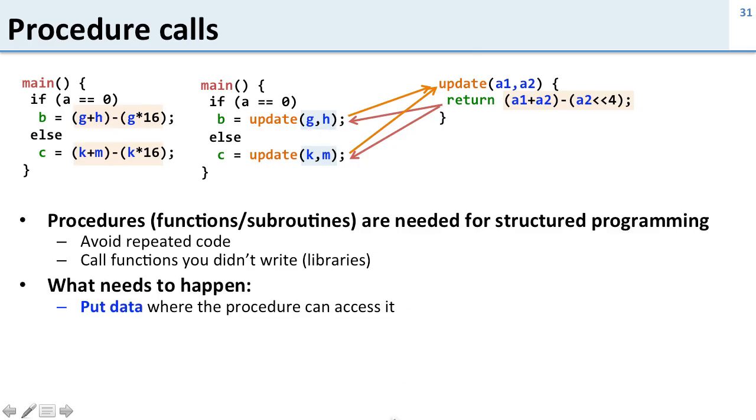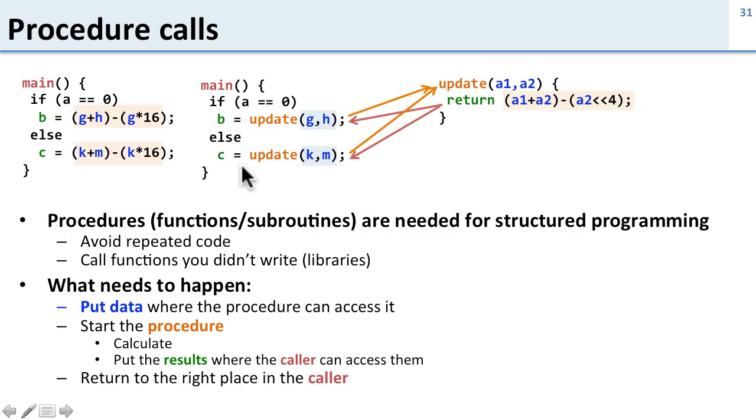In order to do function calls we need to be able to put the input data or the arguments where the procedure can access it. We need to start the procedure - we need to jump to the procedure. We need to do the calculation. We need to put the results where the caller can access it and finally we need to return to the right place. If we're called update from here we need to return to after this instruction and if we call update from here we need to return to after this instruction.